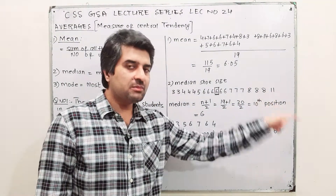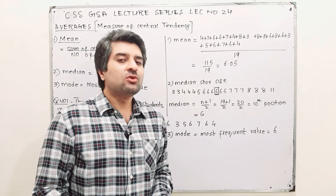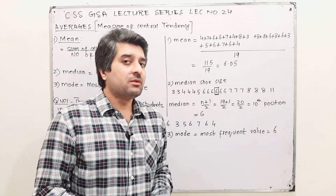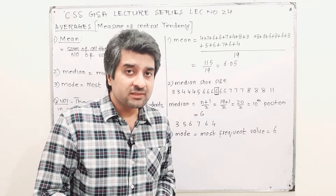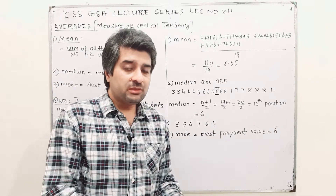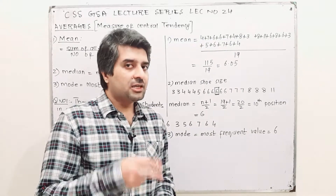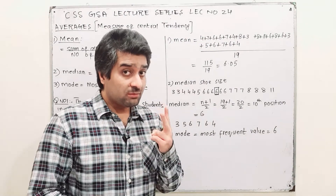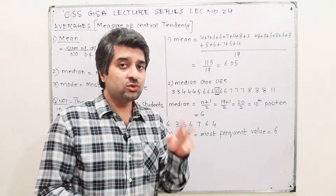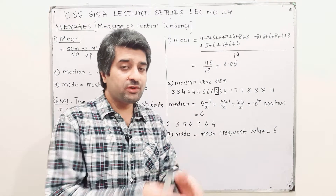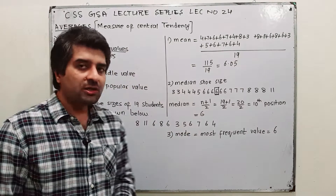For an even number of values — say 20 shoe sizes — you will have two numbers at the middle position. The average of those two values will be the median answer.